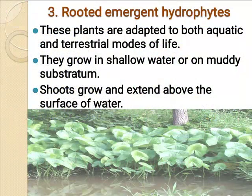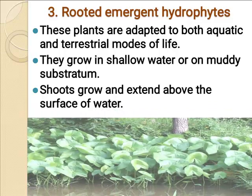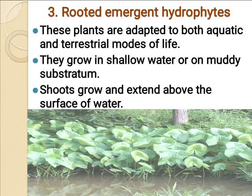The final category is rooted emergent hydrophytes. The plants in this group grow in shallow water with their underground parts in water or in water-saturated muddy soil, extending their shoots above the water surface. They are well-known marsh plants or halophytes. This plant is Sagittaria — below the water surface it has dissected leaves, but above the water surface it has normal leaves.